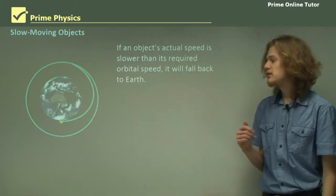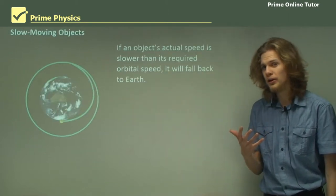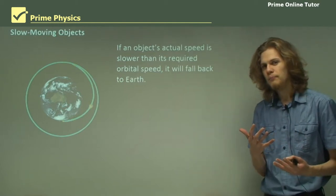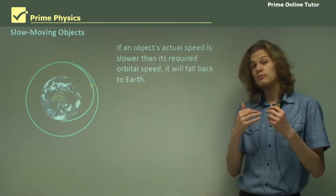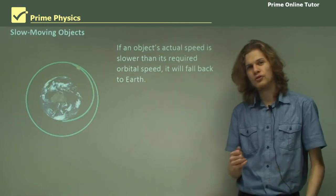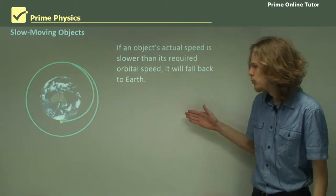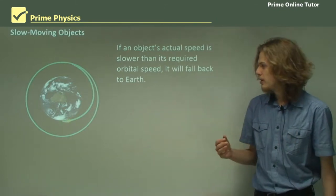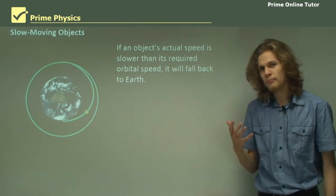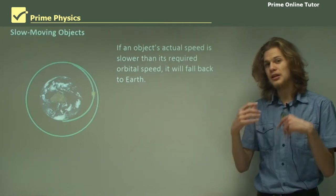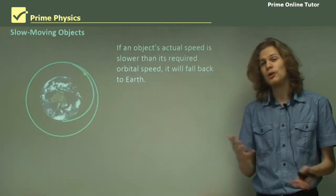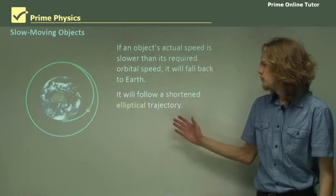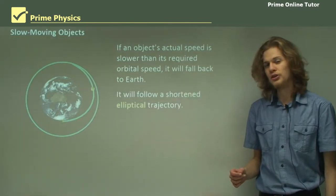Now if an object's actual speed is slower than its required orbital speed that means that it will fall back to Earth. Gravity will be too strong for the centripetal force and it will pull the satellite or other orbiting object toward the Earth. Eventually it will reach the Earth's atmosphere and that will slow it down even more.